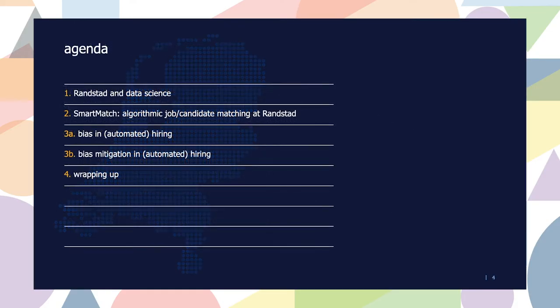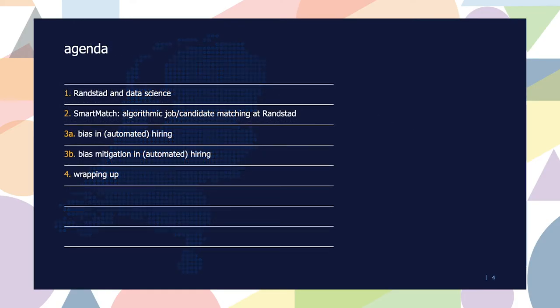The talk is structured as follows. I'll first introduce Randstad and what we do, then zoom into one particular project that's very relevant in the context of this hackathon. I'll then talk more generally about bias specifically in the domain of automated hiring and highlight some opportunities I see for mitigating bias in the same domain. At the end I'll leave you with some parting thoughts.